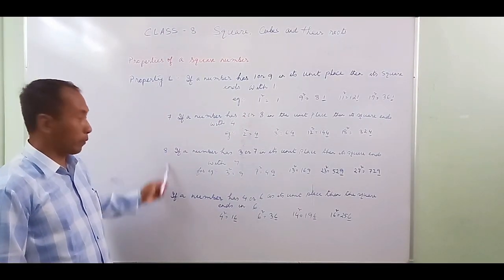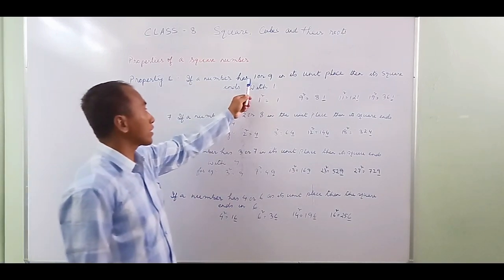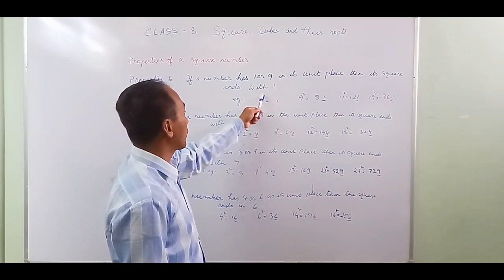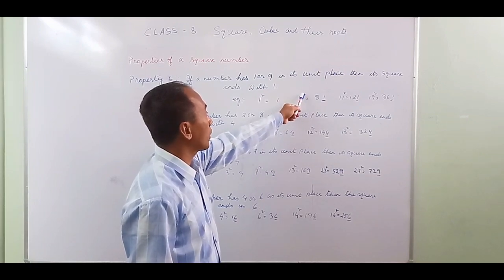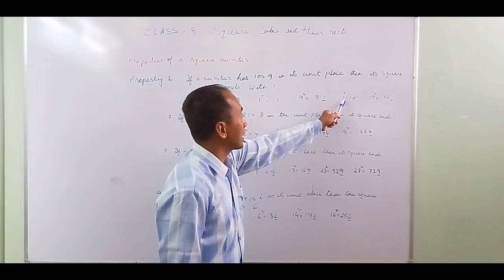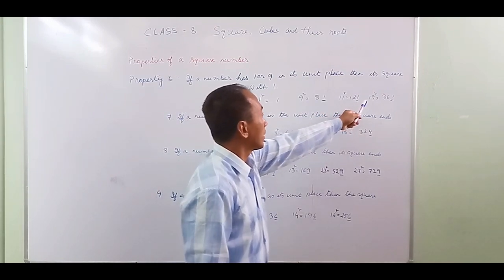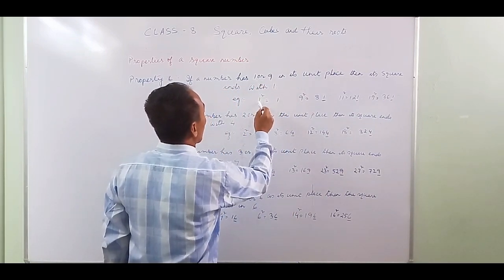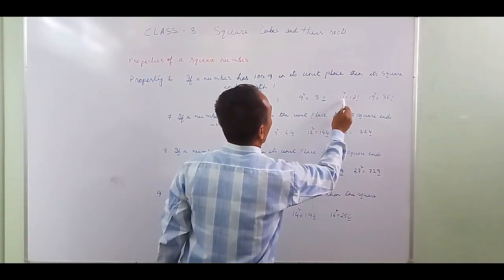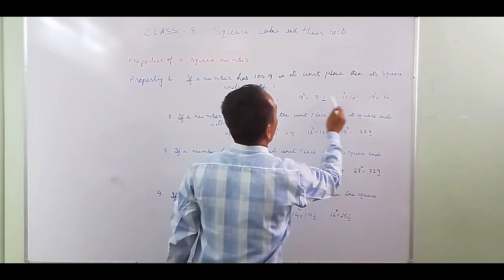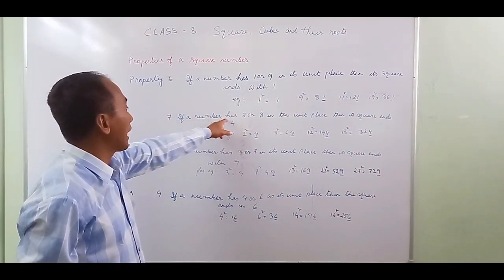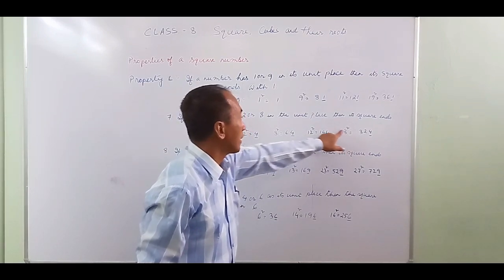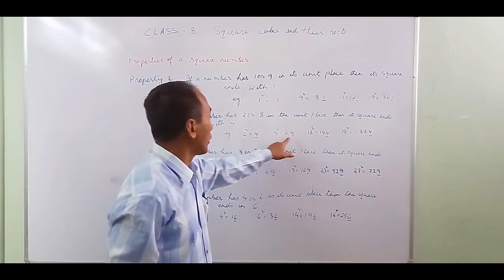Property 6: if a number has 1 or 9 in its unit place, then its square ends with 1. For example, 1 squared is 1, 9 squared is 81, 11 squared is 121, 19 squared is 361 — all end in 1. Property 7: if a number has 2 or 8 in the unit place, then the square ends with 4. For example, 2 squared is 4, 8 squared is 64.